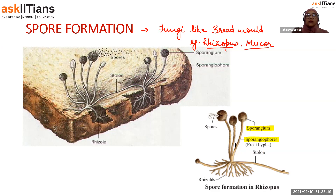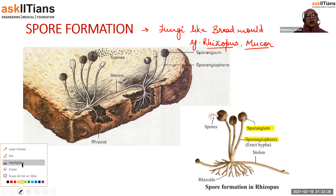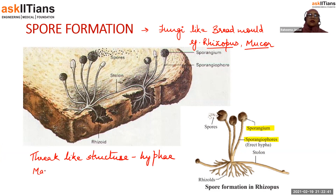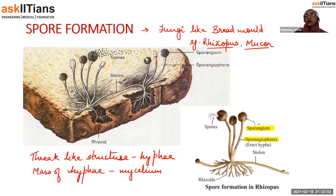A mass of hyphae is known as mycelium. The thread-like structure is known as hyphae, and a mass of hyphae is known as mycelium. Rhizoids are the root-like structures which absorb nutrients from below.